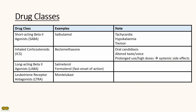Examples of long-acting beta-2 agonists include salmeterol, and the faster-acting formoterol used in the MART regime. Examples of leukotriene receptor antagonists include montelukast.